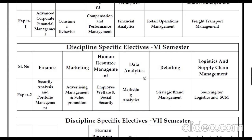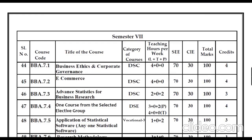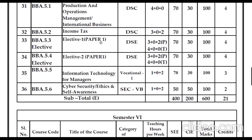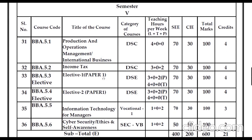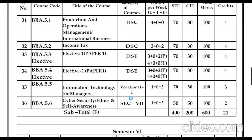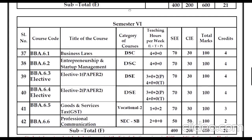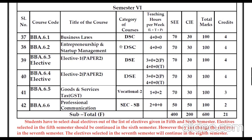If Retailing is selected, Strategic Brand Management would be studied; if Finance is selected, Security Analysis and Portfolio Management is studied. These are Paper 1 and Paper 2 from Elective 1 and Elective 2. The information technology occasional paper covers Cyber Security, Ethics, and Self-Awareness.